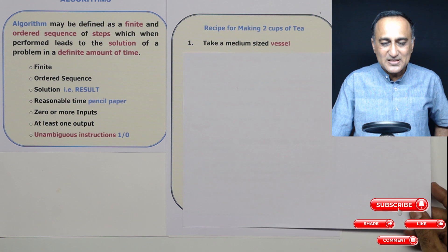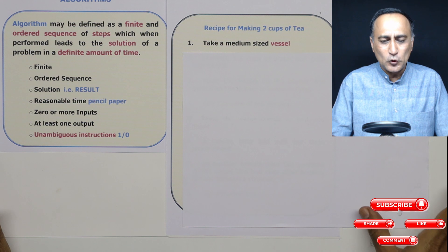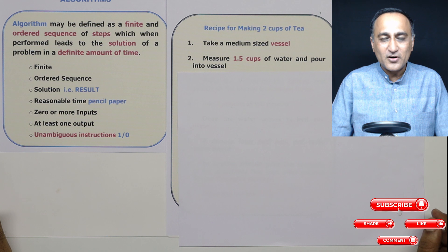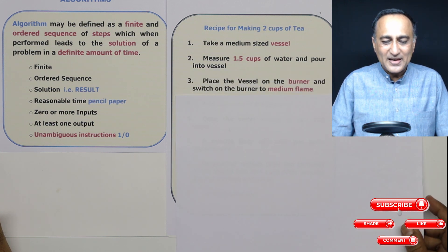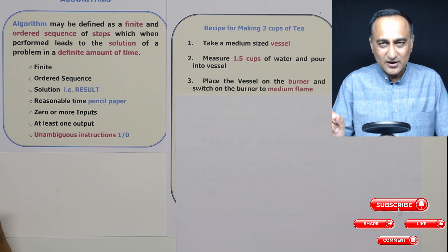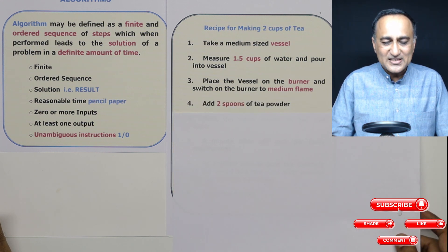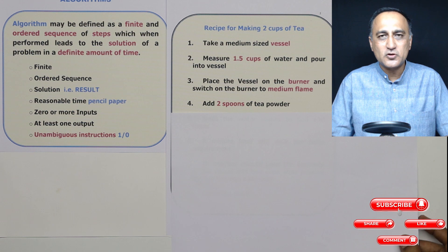Step one: take a medium-sized vessel, since I'm only making tea for two people. Step two: measure one and a half cups of water and pour it into that vessel. Step three: place the vessel on the gas burner or electric stove and set it to medium flame. Step four: add two to three spoons of tea powder, depending on how strong you want the tea.